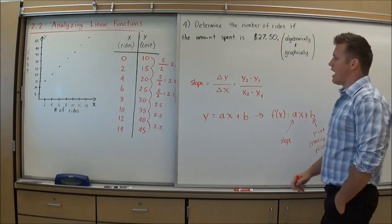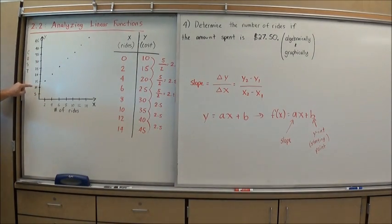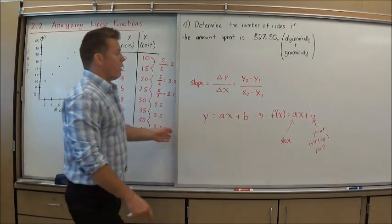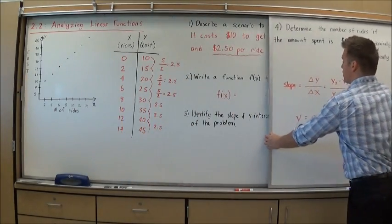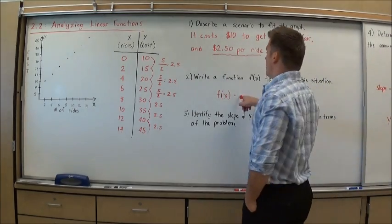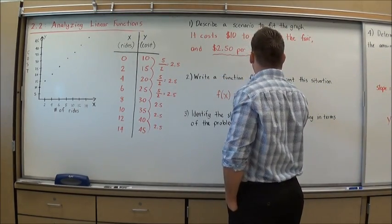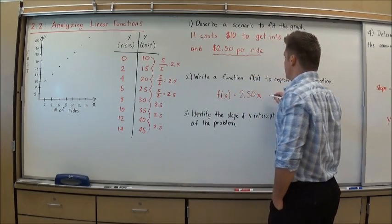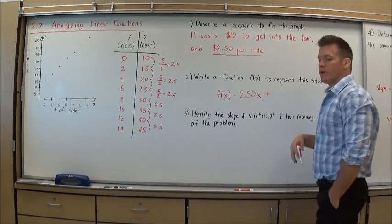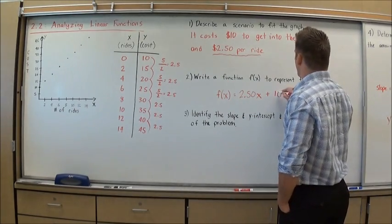Thinking of that graphically, 10 here was my starting point, the very first value when nothing else has happened. So I felt pretty comfortable writing the function as my slope, 2.50 per ride, x, plus my y-intercept which is my starting point. In this problem, the starting point or y-intercept was 10.